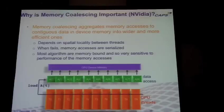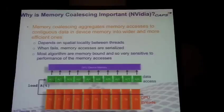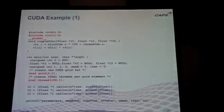That requires that when you're programming, you take coalescing into account, because when it doesn't work, the performance is really bad. Most of the performance of the GPU comes from this great memory system that can load a lot of data to the cores. This is a property you need to take into account when dealing with GPU efficiency and performance.